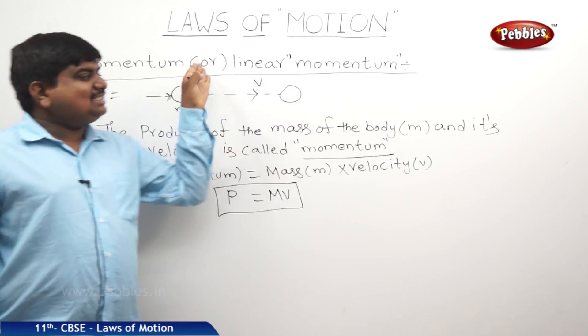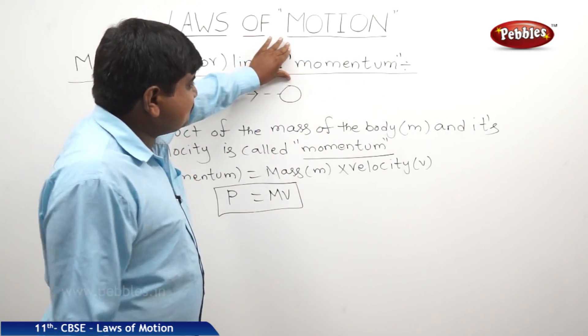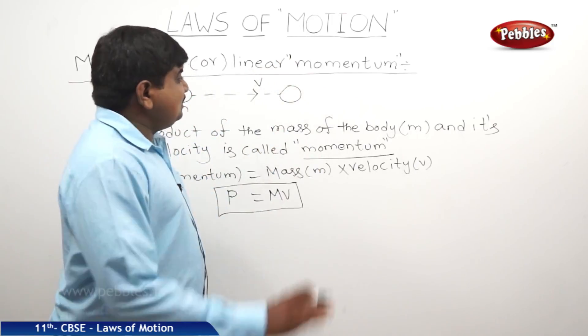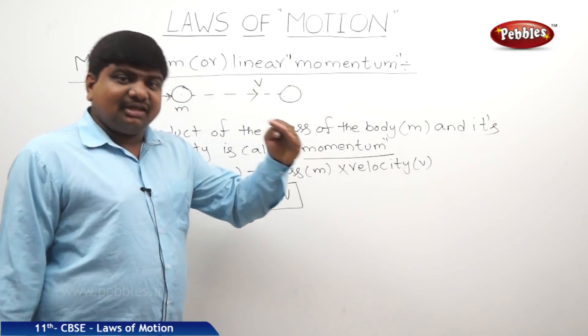If a body moves in a straight line, then its momentum is called linear momentum. Or if the body is moving in a circular path, then its momentum is called angular momentum.